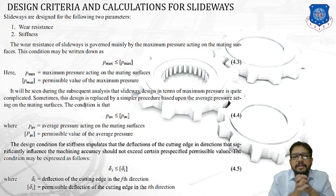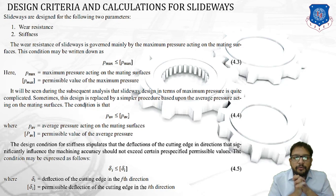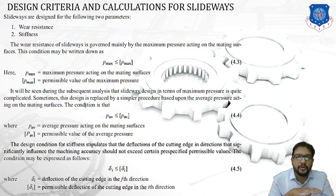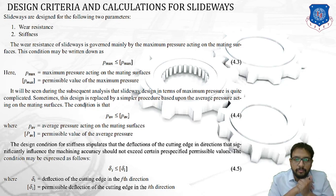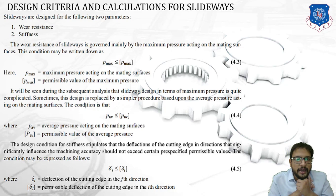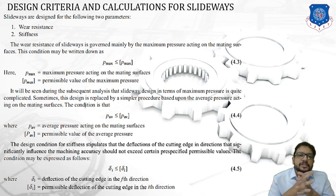Slide ways would be designed based on two parameters. The first one is called wear resistance and the second is called stiffness. Wear means wear and tear — the mating surface gets rougher and material is removed. Higher wear resistance means lesser material removal. Stiffness means resistance to deformation — higher resistance to deformation of the slide way material is desirable.